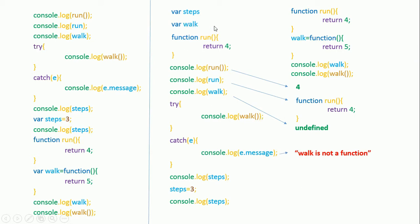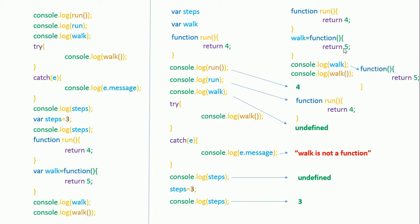As discussed, 'steps' is declared by the JavaScript compiler at the first line and initialized with undefined — so we get undefined. Then steps is assigned the value three, and printing it gives three. Next, we assign an anonymous function to 'work', and then calling work as a function gives us the output five. This is hoisting.